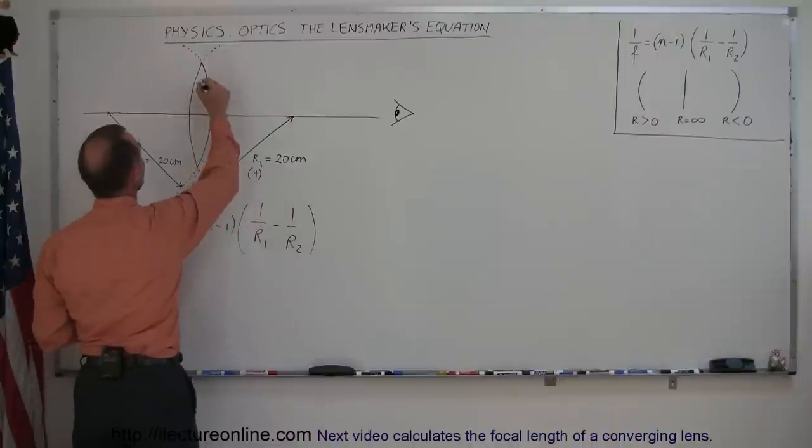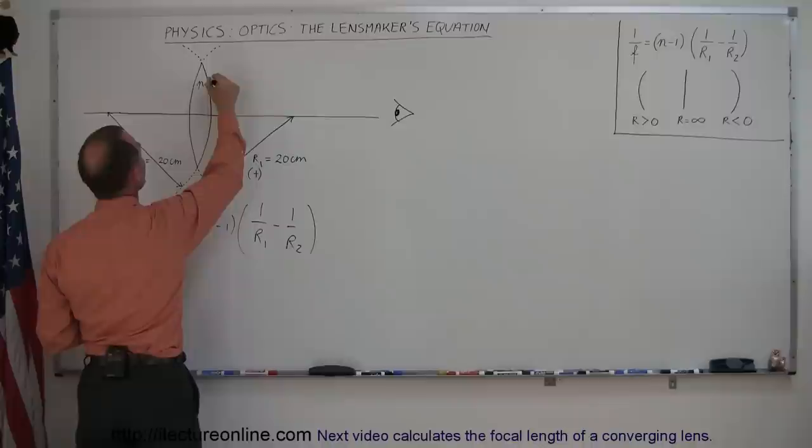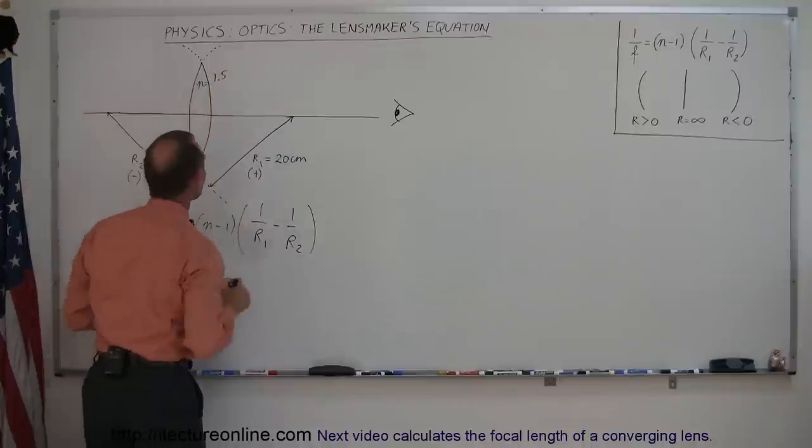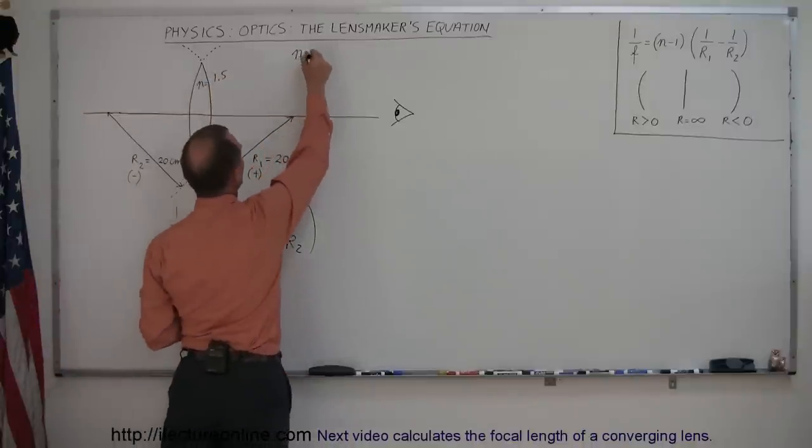Let's say that the index of refraction of the glass is 1.5. The index of refraction of the air, N equals 1.